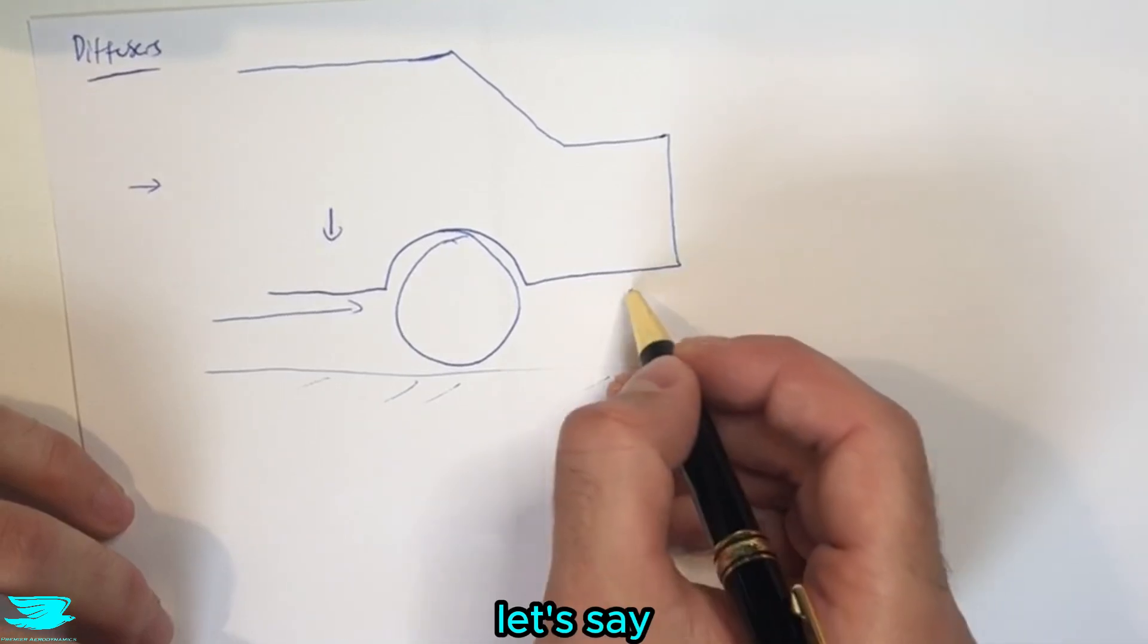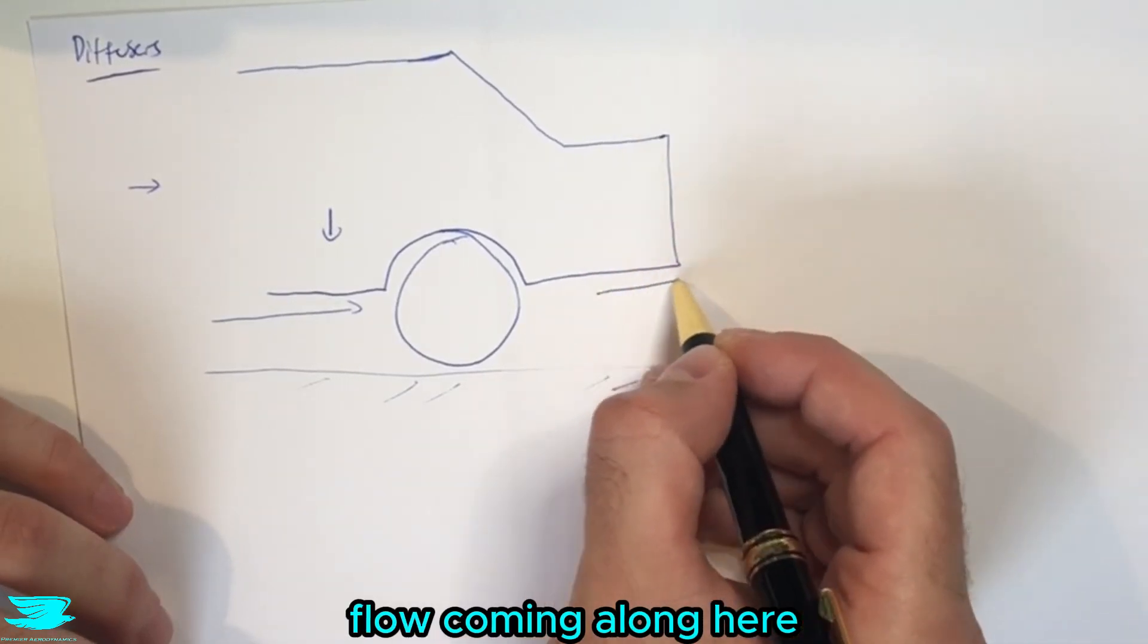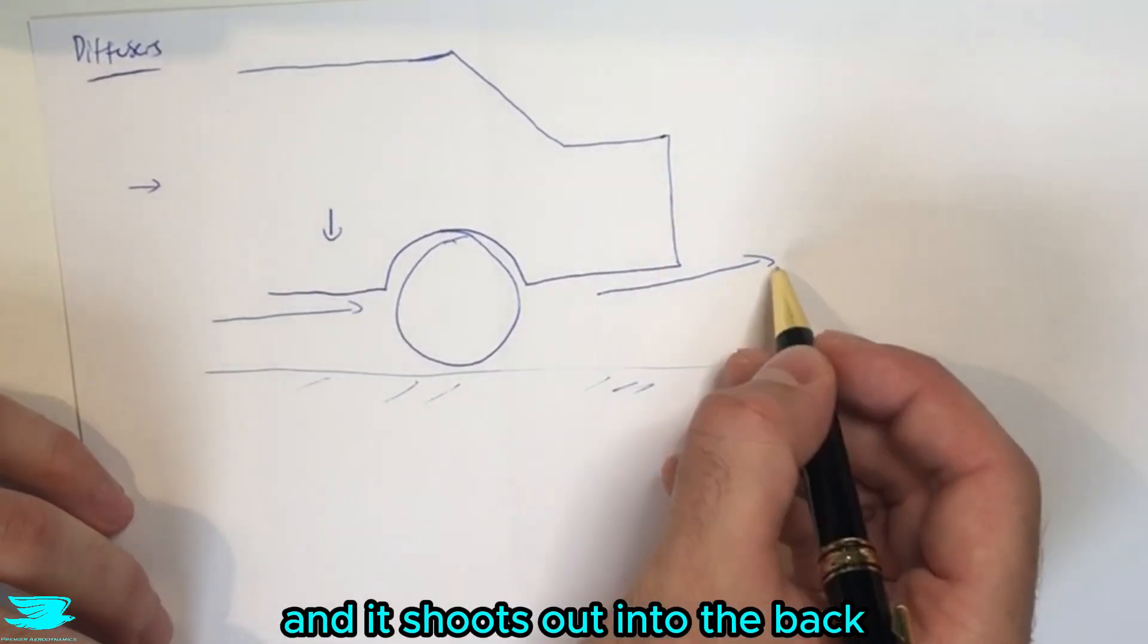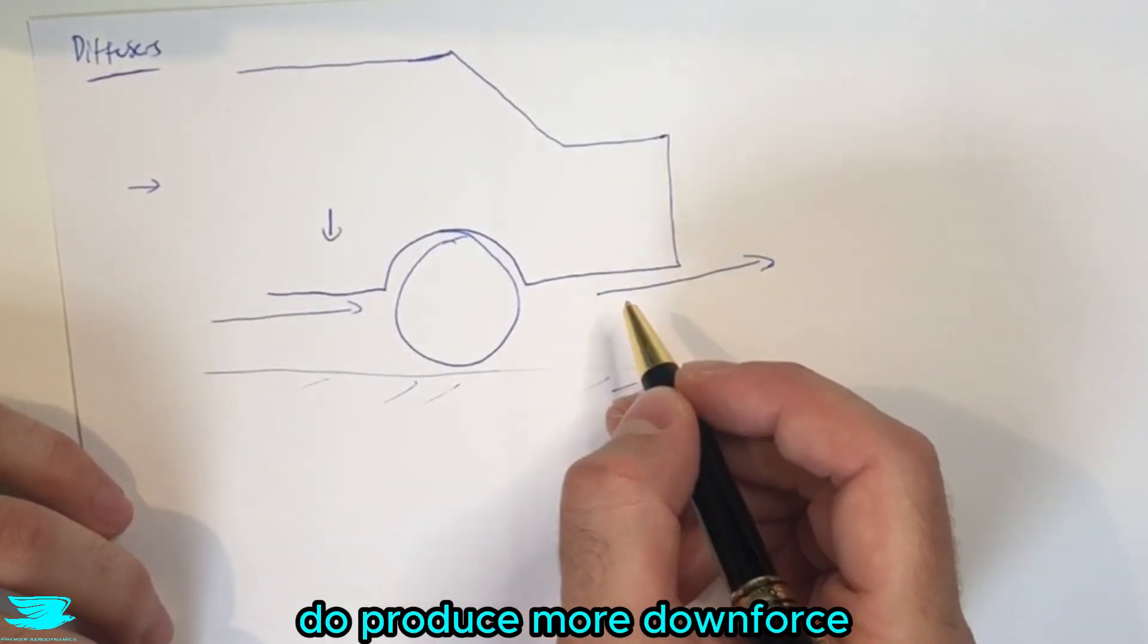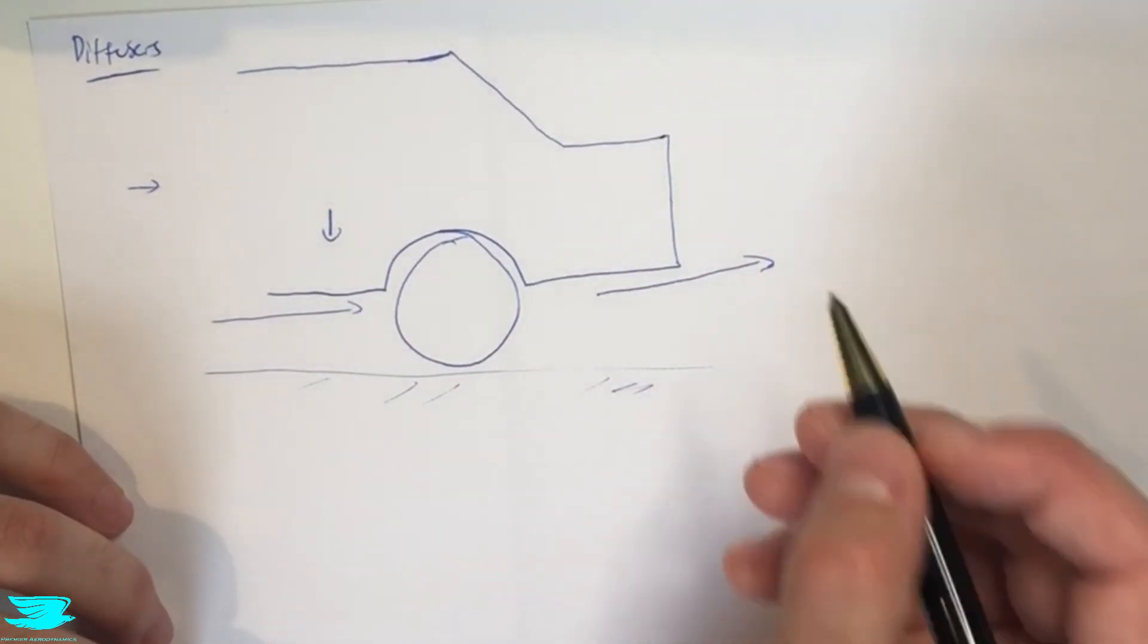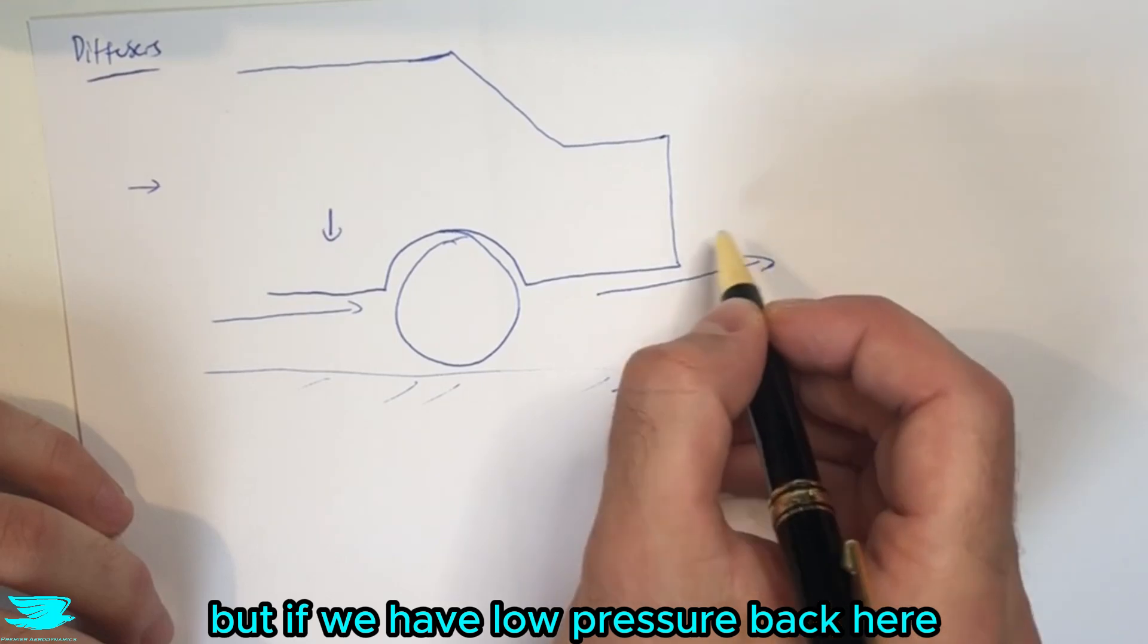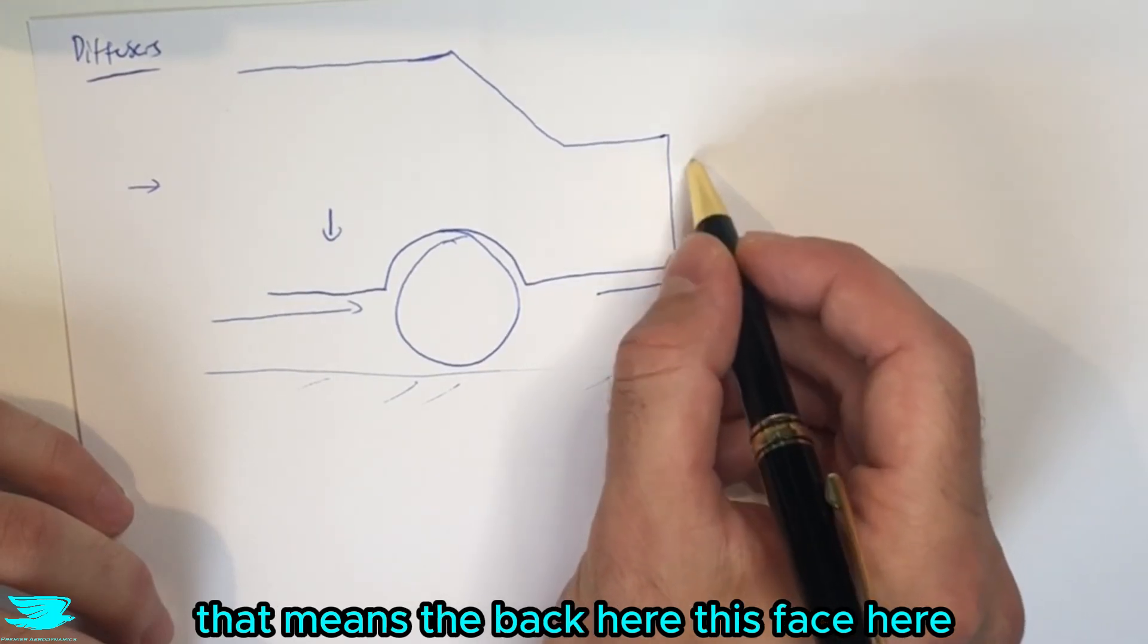But as we get to the back here, let's say we have still a low pressure flow coming along here and it shoots out into the back. Is that a good thing? Well still in this region we do produce more downforce so that's pretty good, but if we have low pressure back here that means the back here, this face here, is going to be exposed to a little bit of low pressure air.